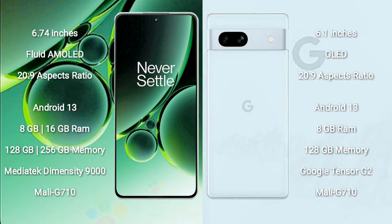OnePlus Nord 3 runs on the Android 13 operating system. Google Pixel 7a also runs on the Android 13 operating system. OnePlus Nord 3 comes with 8GB or 16GB RAM and 128GB or 256GB internal storage.